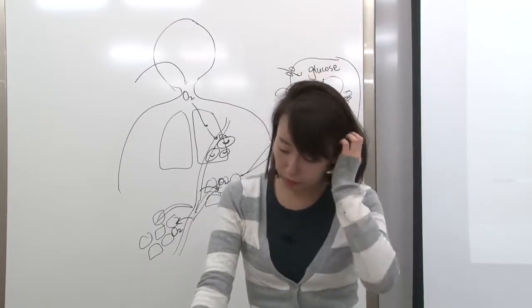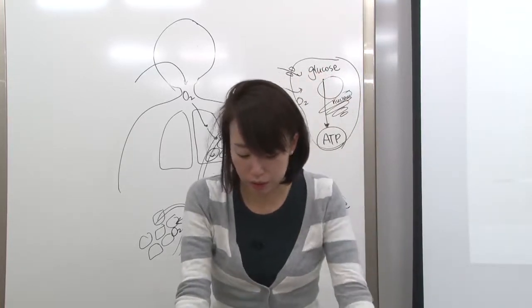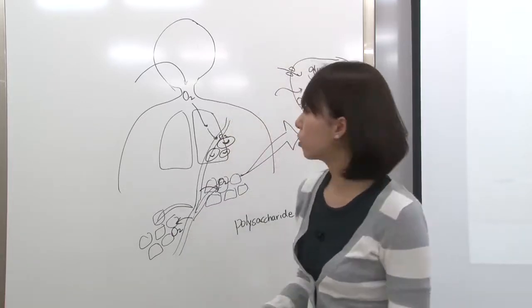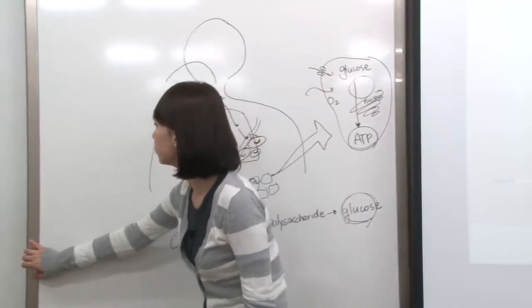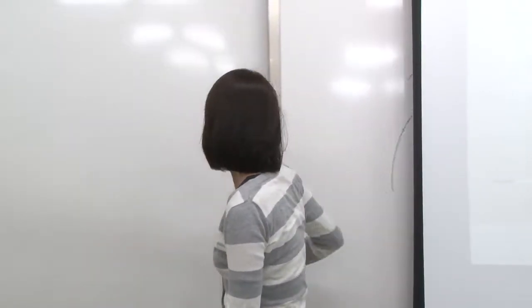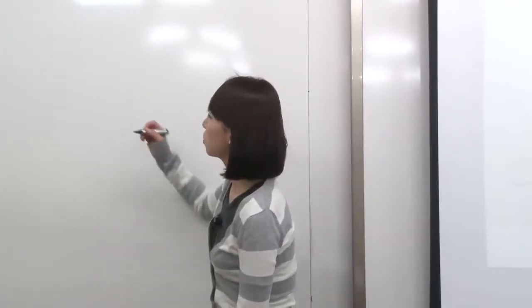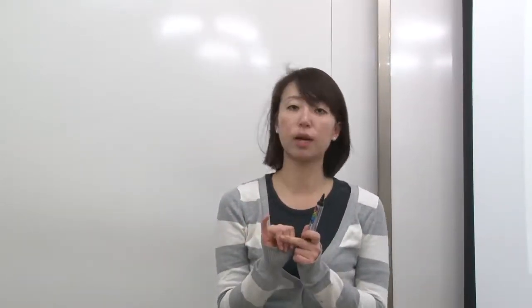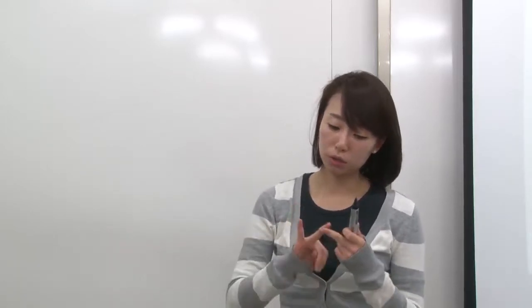When you go to page 87, this is the structure for ATP. We talked about the nucleotide before. We talked about four polymers in our body: carbohydrate, protein, lipid, and nucleic acid. In nucleic acid, we talked about DNA and RNA, and that has a monomer that is called nucleotide.